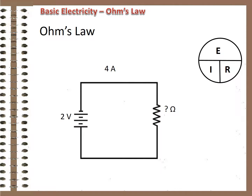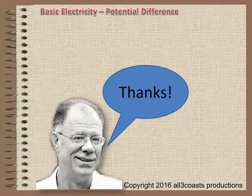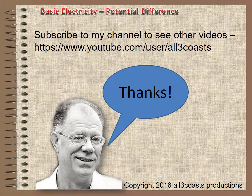What about this one? 2 volts divided by 4 amps equals one half ohm. Easy, right? So that's Ohm's Law: current in a circuit is directly proportional to voltage and inversely proportional to resistance, every time. Thanks for watching.